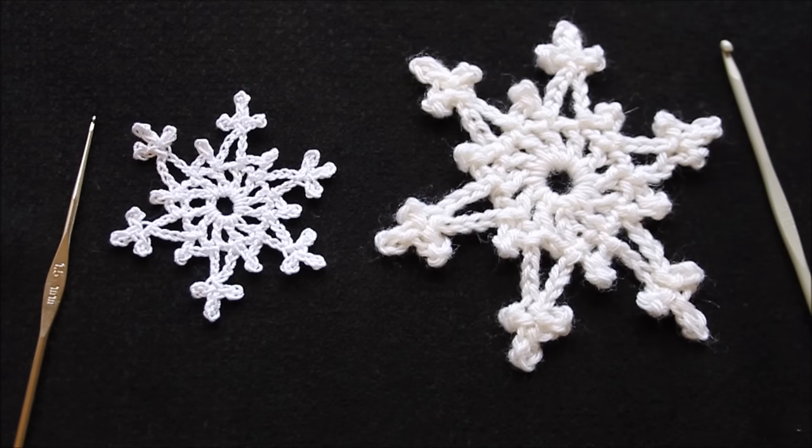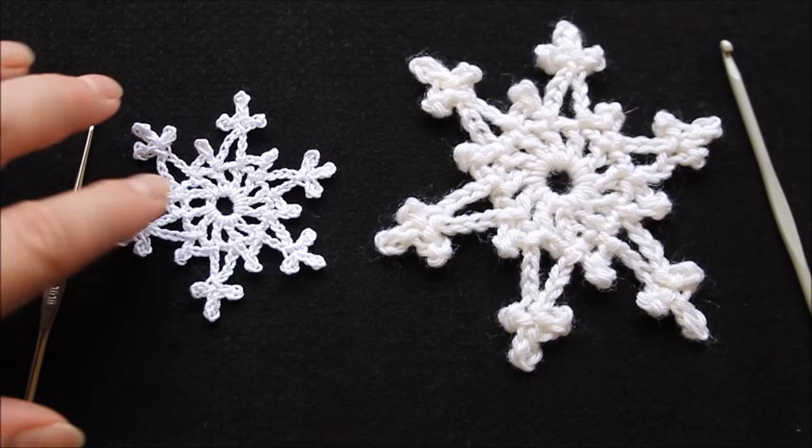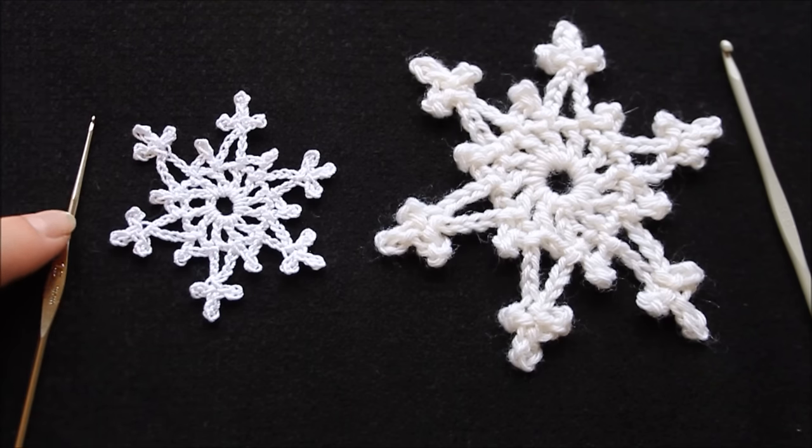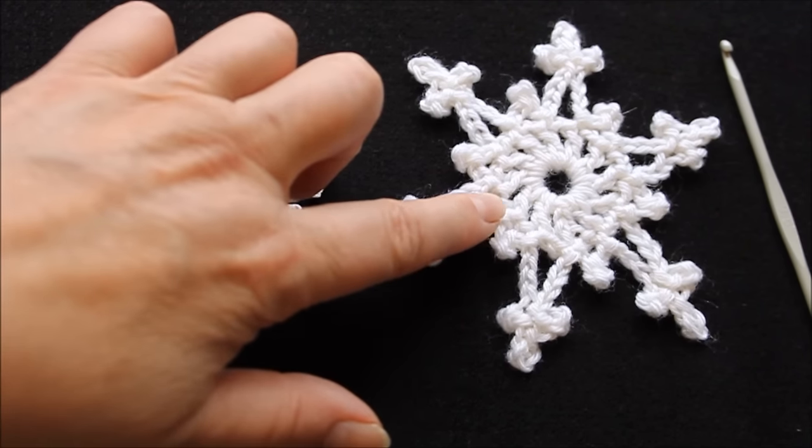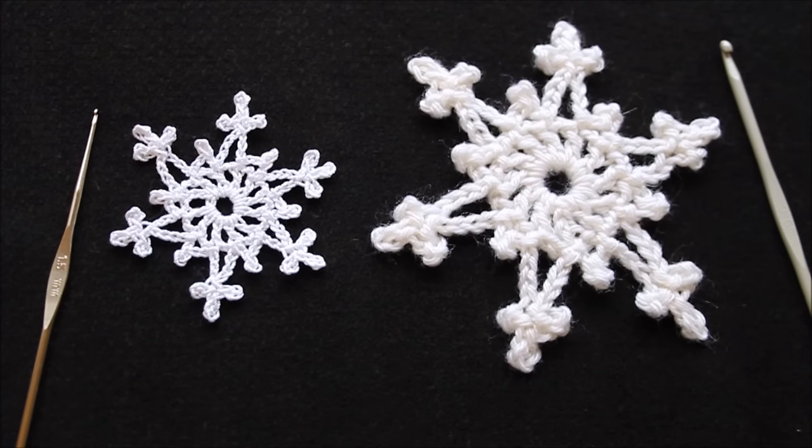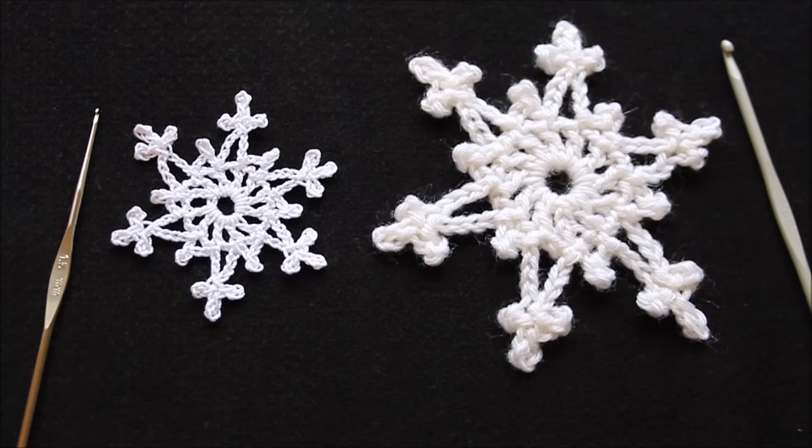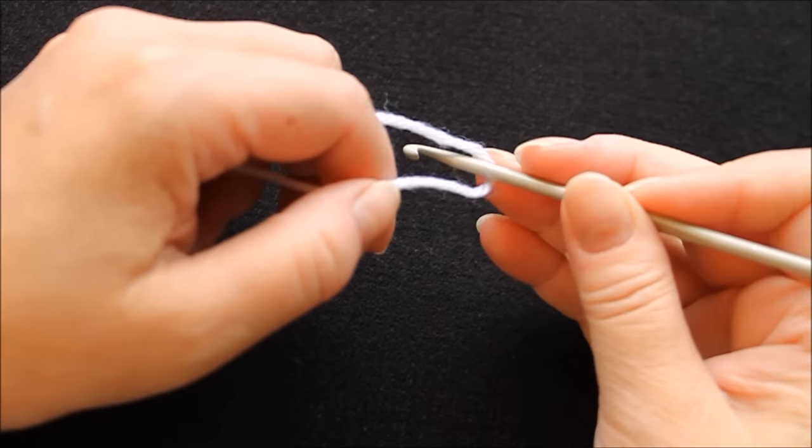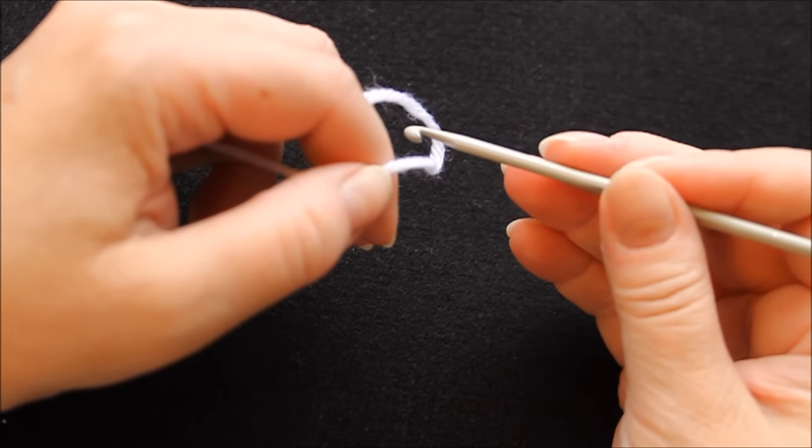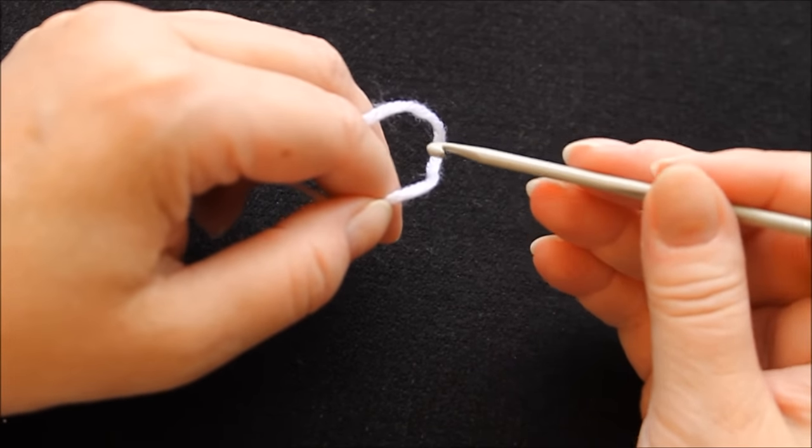These two snowflakes are exactly the same, only one has been done with crochet thread and a 1.5 millimeter hook and the other one with wool and 3.5 millimeter hook. I have been using these for many things like attaching to Christmas cards or gift tags as well as tree ornaments. So let's make one. I'm using the wool here because it's easier to see as it's much thicker.